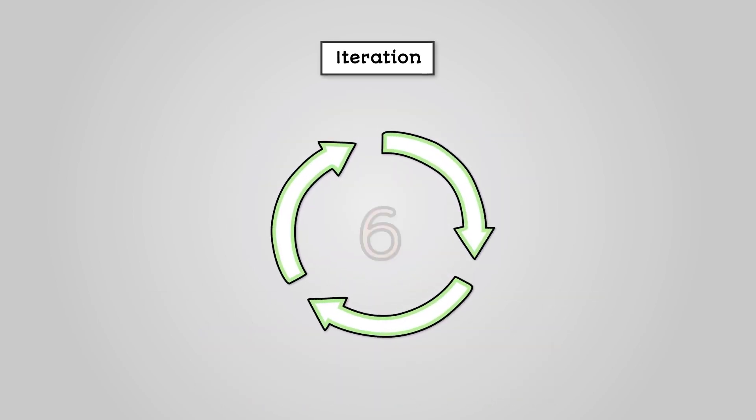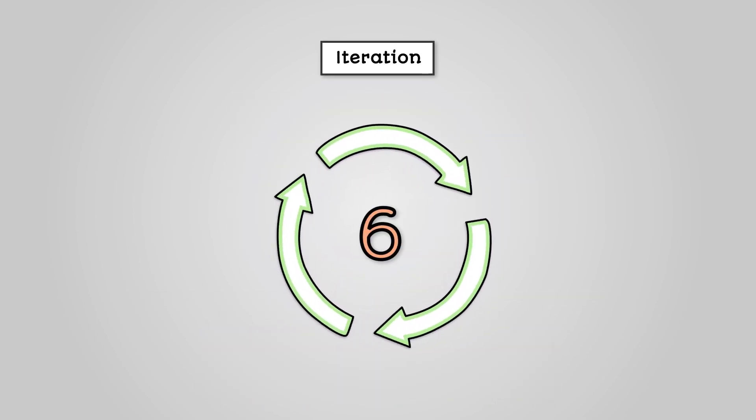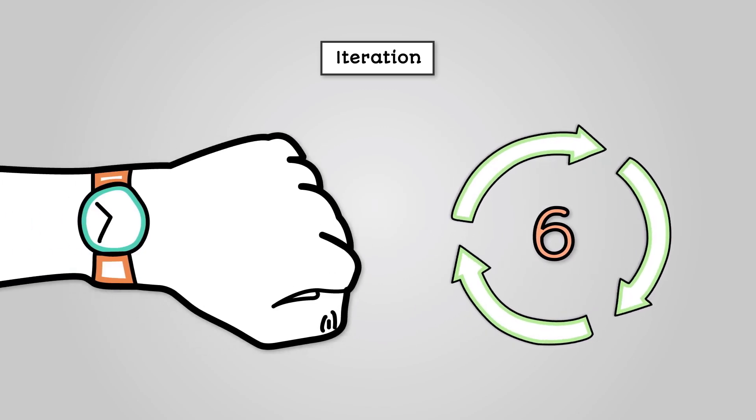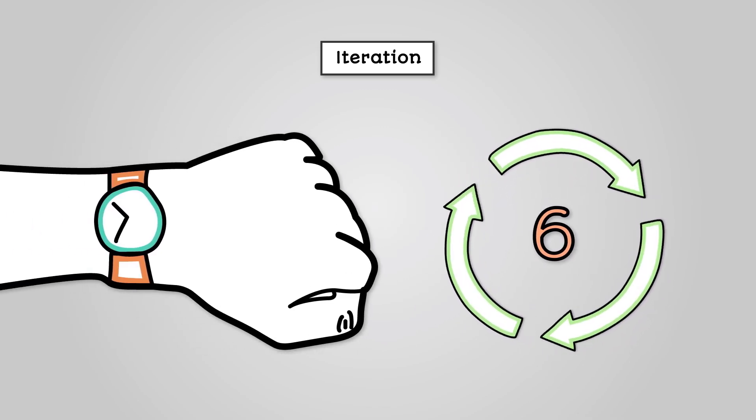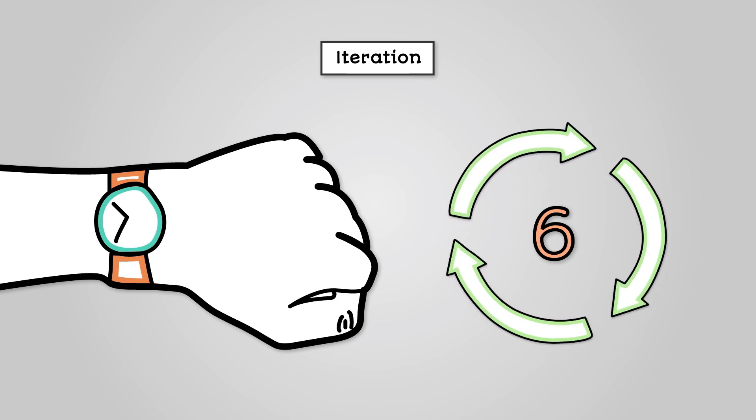You might repeat this for six times each day or you might repeat this until it is 3:30 p.m. There are different ways of controlling how many times you repeat something in a loop.